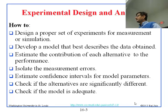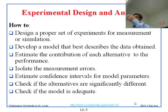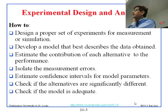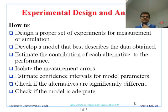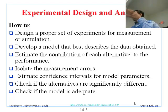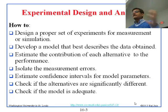Check if the alternatives are significantly different — whether we are 90 percent or 95 percent confident that they are different. And check if the model is adequate. [Student question: The alternatives between what?] The alternative means that one of the variables has five values — for example, five types of CPUs — those are the five alternatives. Basically, check if different values of the factor result in different things.